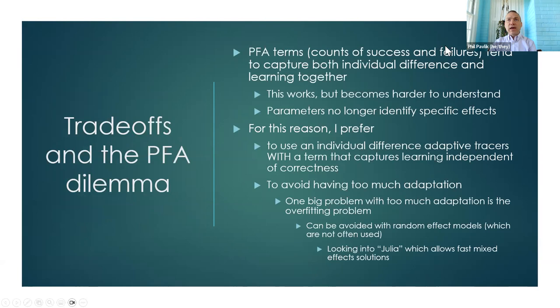PFA terms — counts of successes and failures — tend to capture both individual differences and learning together. They capture whether people are learning because successes will increase with learning, but they also capture whether people have prior knowledge and are already proficient. This creates a lot of multicollinearity, so when you have terms for successes and failures in the model, it becomes difficult to interpret the more you use.